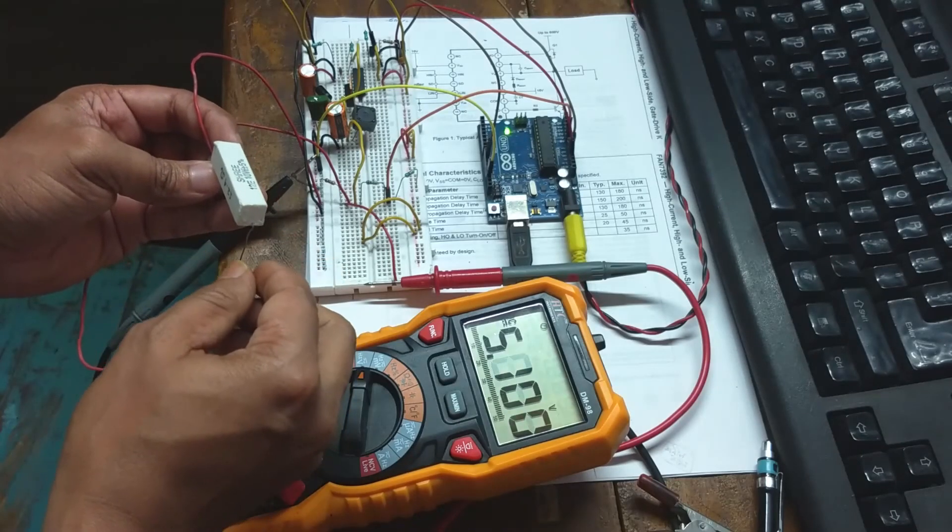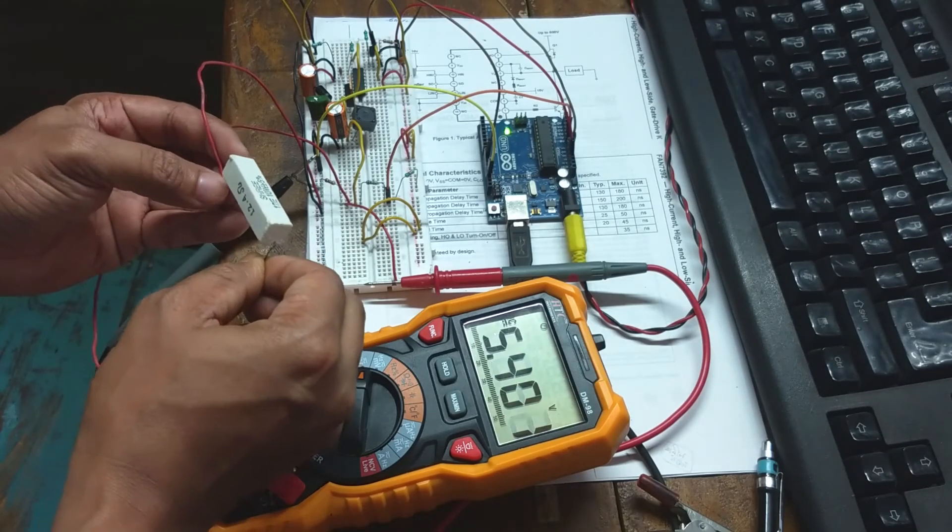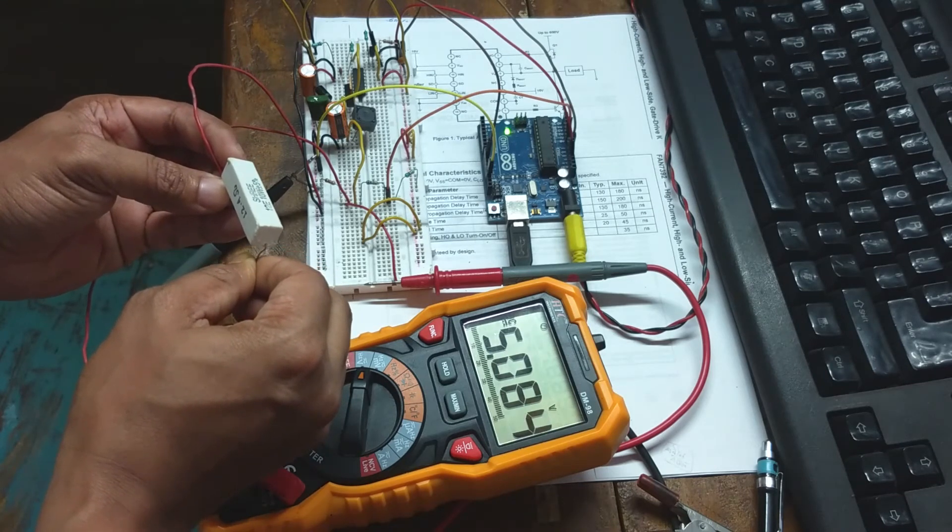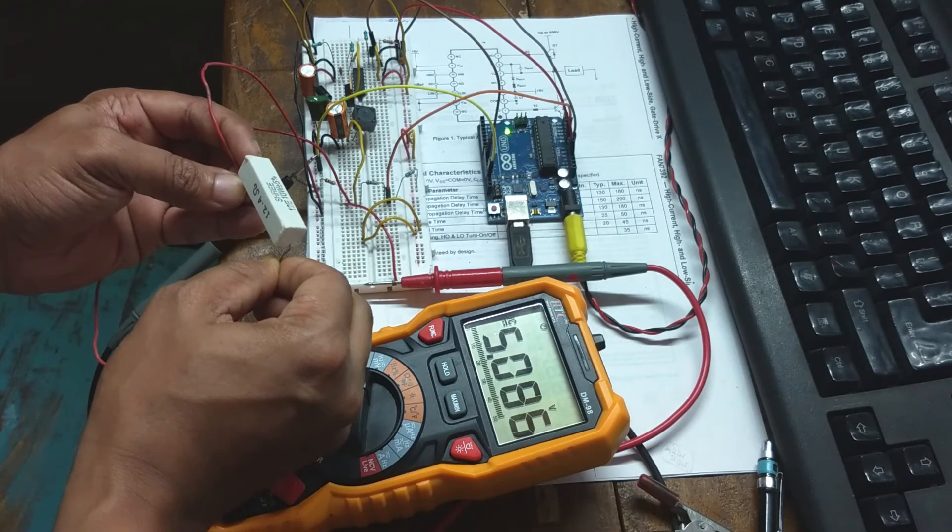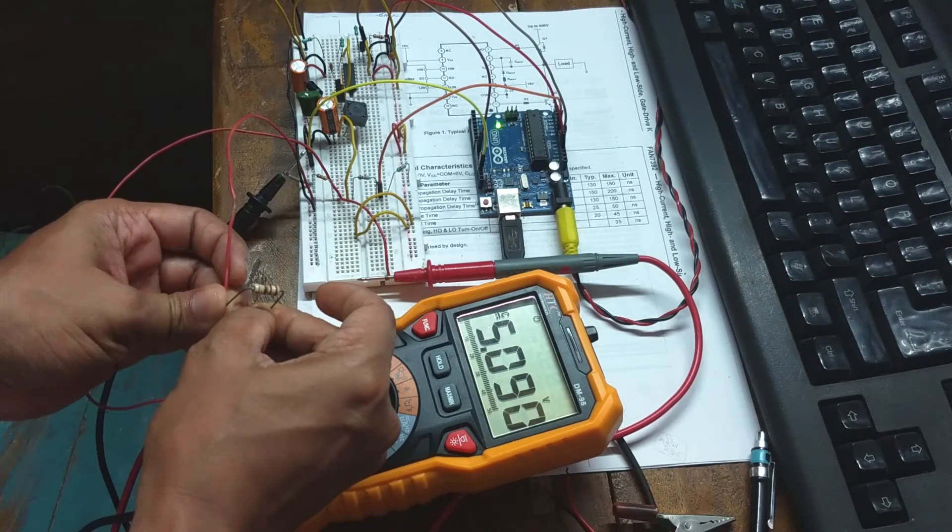Now I am connecting this 12 ohm resistor as load. The voltage is dropped only by 0.01 volt which is pretty much acceptable. With 10 ohm load, the voltage is still at 5 volt.